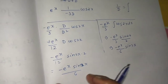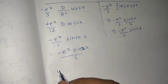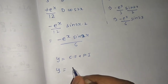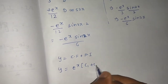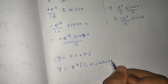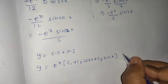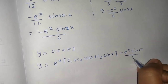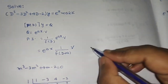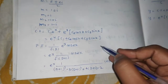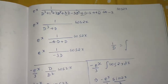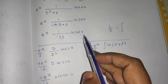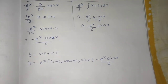The final answer is CF + PI. Our CF is e^x·(c₁ + c₂·cos x + c₃·sin x) and our PI is -e^x·sin2x / 6. So the complete general solution is y = e^x·(c₁ + c₂·cos x + c₃·sin x) - (e^x·sin2x)/6. To summarize: we applied the exponential shift rule to handle e^x·cos2x, found the CF from the auxiliary equation, applied the cos(ax) substitution (D² → -a²), and used 1/D as integration.